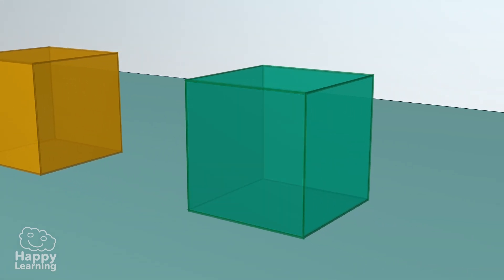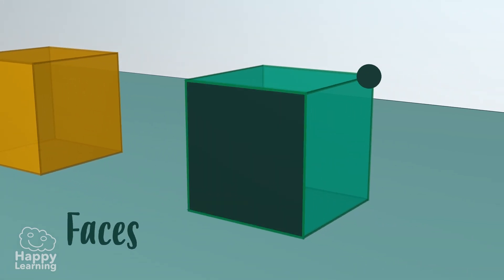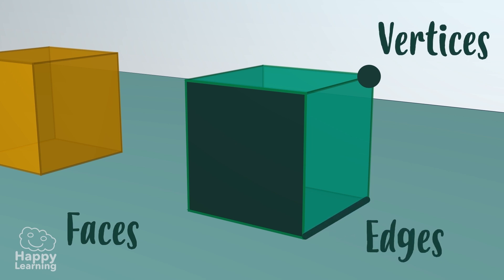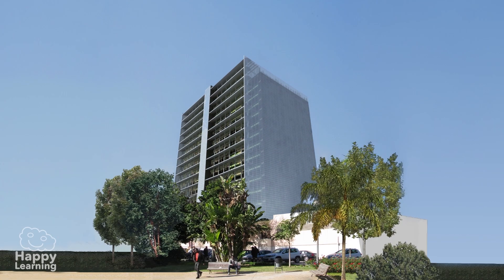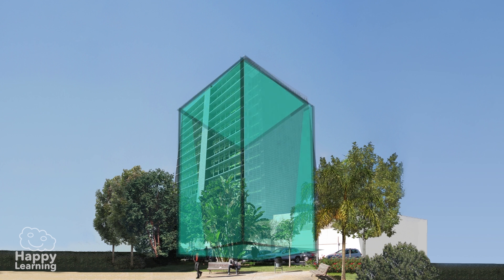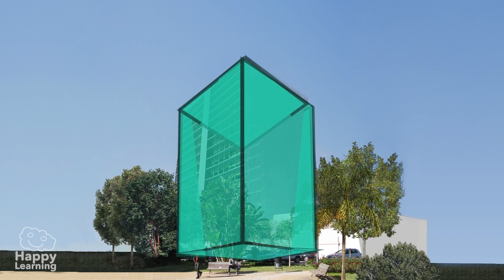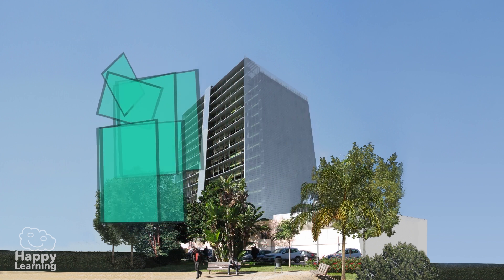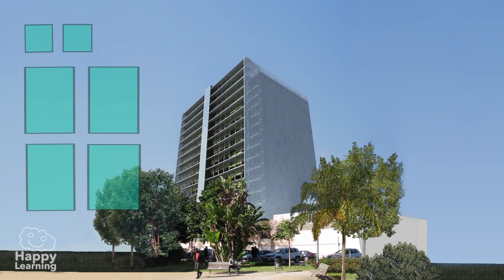Observe this building and we will discover the three elements. As you can see, this building is a polyhedron formed by quadrilaterals, which are polygons with four sides. Faces are the polygons that make up the polyhedron.